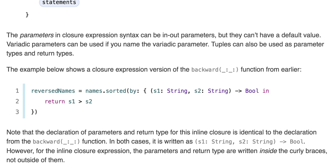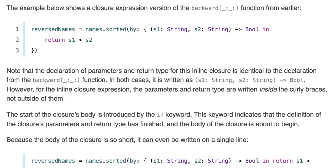Note that the declaration of parameters and return type for this inline closure is identical to the declaration from the backward function. In both cases it's written as (s1: String, s2: String) -> Bool. However, for an inline closure expression, the parameters and return type are written inside the curly braces, not outside of them. When we write a function we write the parameters and return type outside the braces; when writing the inline closure we write them inside the braces and then say in, followed by the body. The start of the closure's body is introduced by the in keyword, which indicates that the definition of the closure's parameters and return type has finished and the body has begun.